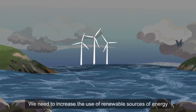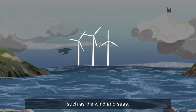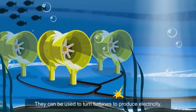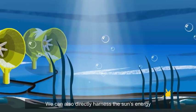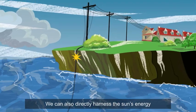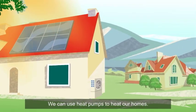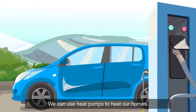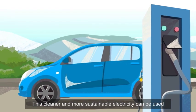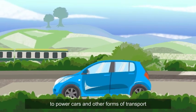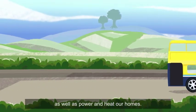We need to increase the use of renewable sources of energy such as the wind and seas. They can be used to turn turbines to produce electricity. We can also directly harness the sun's energy by using solar panels for heat or electricity. We can use heat pumps to heat our homes. This cleaner and more sustainable electricity can be used to power cars and other forms of transport, as well as power and heat our homes.